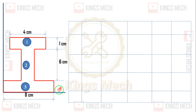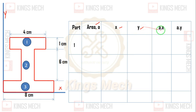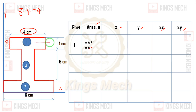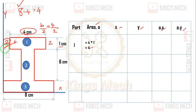So this is your x-axis and this is your y-axis. We set up the table with part diagram, area, x-bar, small x, small y, a·x, a·y. For the first flange, the area is 4 into 1 which equals 4. For finding the value of x: 8 minus 4 equals 4 centimeters. The value is given as a rectangle, so b divided by 2: 4 divided by 2 equals 2.